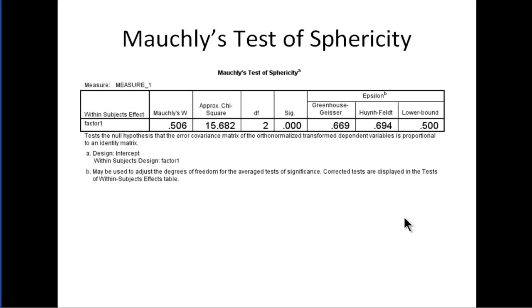I can see that Mauchly's W is 0.506, approximate chi-square 15.682, and it's statistically significant—it's less than 0.05, and I don't want that typically.